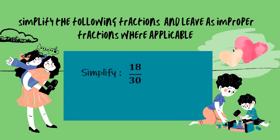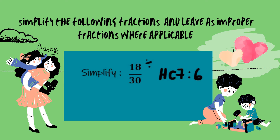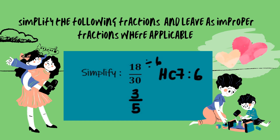To simplify 18 over 30 we start off by finding the highest common factor. The highest common factor of both 18 and 30 is 6. 18 divided by 6 is equal to 3 and 30 divided by 6 is equal to 5.